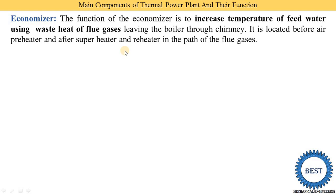The exhaust gas coming out from the boiler is passed first through the superheaters, then through the economizer, and then through the air preheaters. This sequence will be studied in the layout of the thermal power plant — here we just understand the functions.